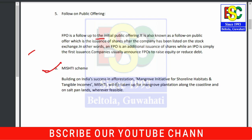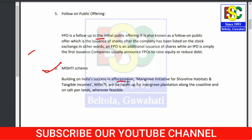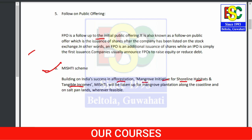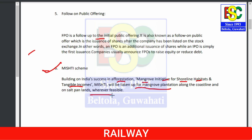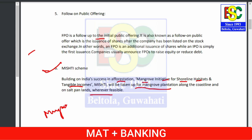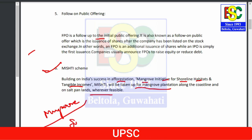Point number six: MISHTI scheme. This scheme is related to afforestation. The full form is Mangrove Initiative for Shoreline Habitats and Tangible Income. It is for improving mangrove cultivation along the coastline and salt pan areas. In India, mangroves are generally seen in the Sundarbans delta.